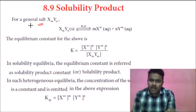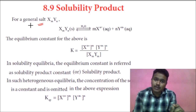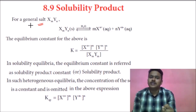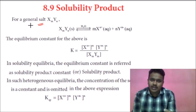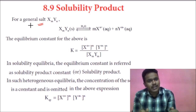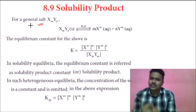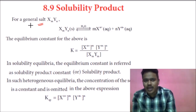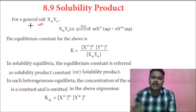Whether a salt is sparingly soluble or completely soluble, whatever amount dissolves in water completely converts into ions. If a salt is not soluble, there is no chance of converting into ions — that is common sense. It is soluble means it converts into ions; it is not soluble means it is not converting into ions.